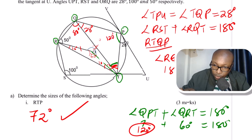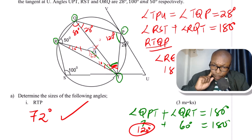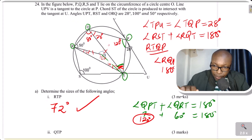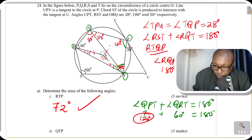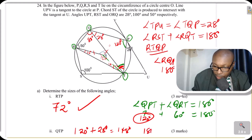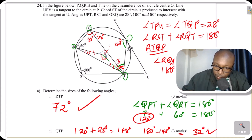Now having angle QPT as 120 degrees, it is easier to get angle QTP. Consider triangle QPT: we have 120 degrees and 28 degrees, giving 148 degrees. The sum of interior angles in a triangle is 180, so the remaining angle QTP is 180 minus 148, which gives 32 degrees. So angle QTP is 32 degrees.